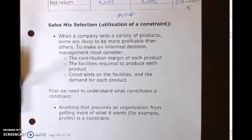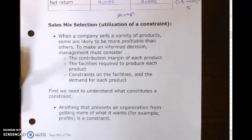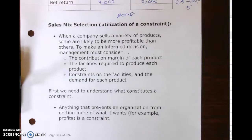You only have enough time to work part-time job A and then maybe some of part-time job B; you don't have enough hours to work both. So your constrained resource is time, and you maximize by spending most time on the job that pays the highest wage per hour. Similarly, if we have a machine with only enough hours to satisfy some demand for product A and some for product B, we emphasize the product that gives us the highest contribution margin per minute on the machine.